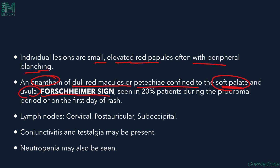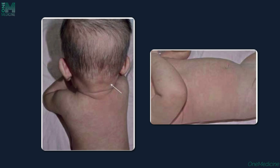The lymph nodes can also be affected, causing lymphadenopathy. The most commonly affected lymph nodes are the cervical, postauricular, and suboccipital lymph nodes. Conjunctivitis and arthralgia may also be present, and neutropenia can be seen. The maculopapular rash can be seen on the back along with suboccipital lymph node enlargement.